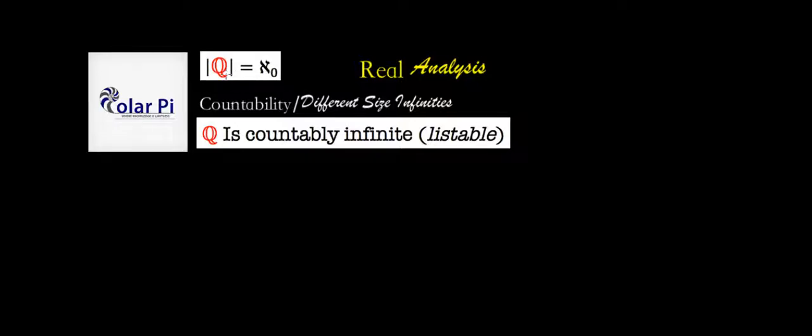Now, if you forgot what rational numbers are, rational numbers are fractions where the numerator and denominator are both integers.